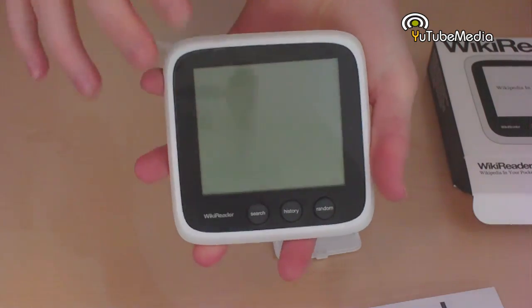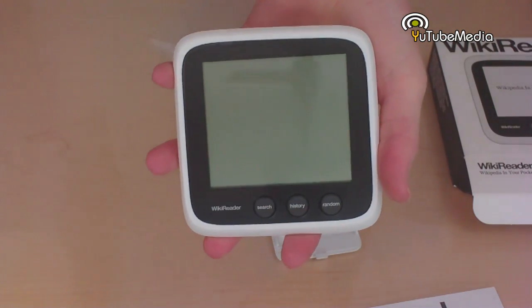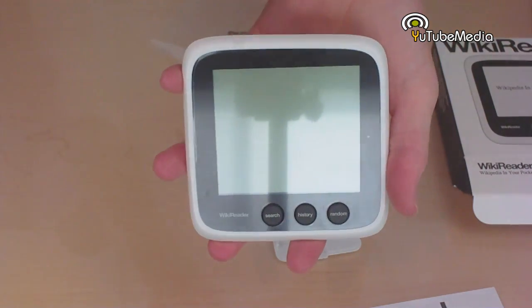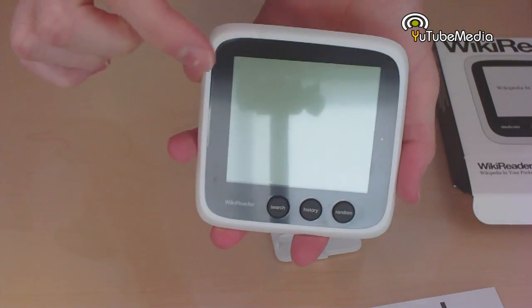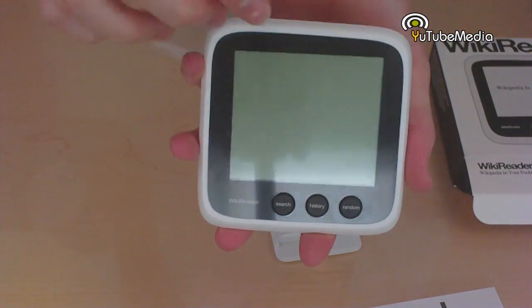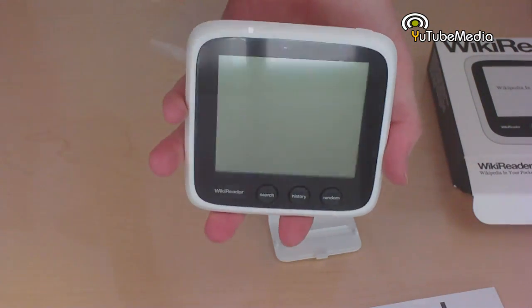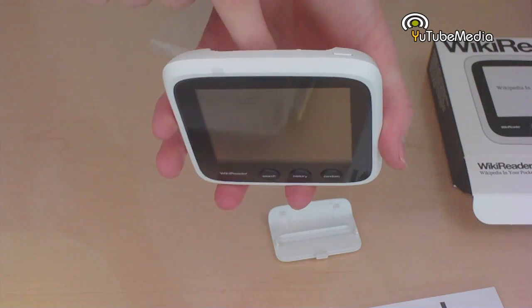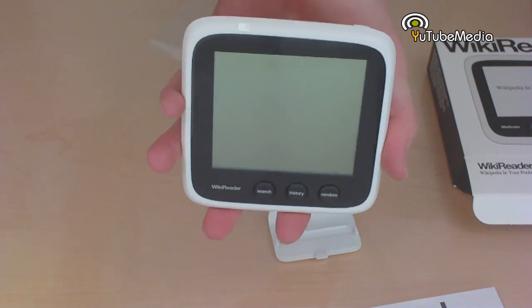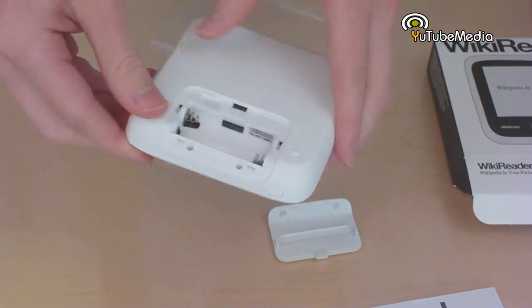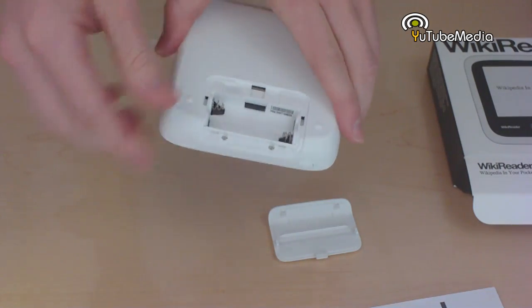In case you're wondering about updating this in the future, they do provide free updates. You can take the microSD card if you have a slot to connect it to your computer and update it yourself, or you can purchase a new card that they'll mail to you and plug in that new microSD card with the newest Wikipedia updates. Let's go ahead and install the batteries and turn this on and demonstrate it.